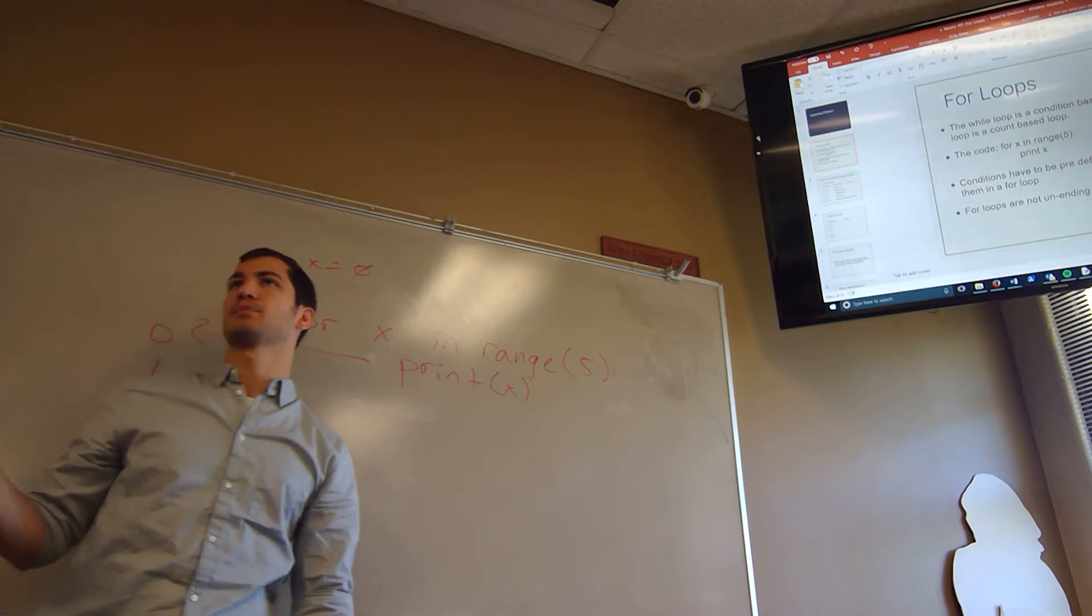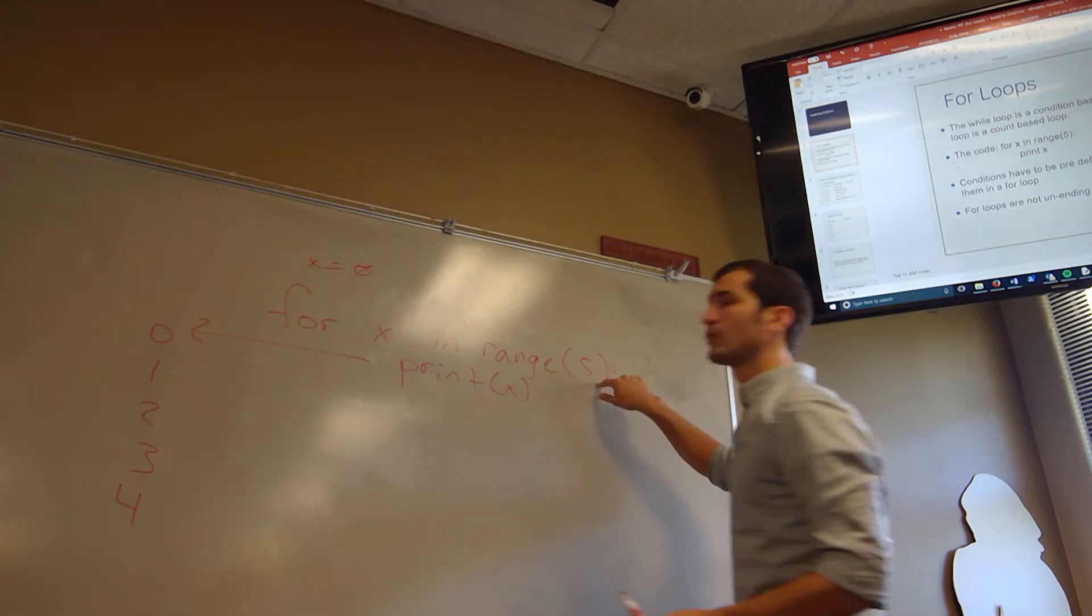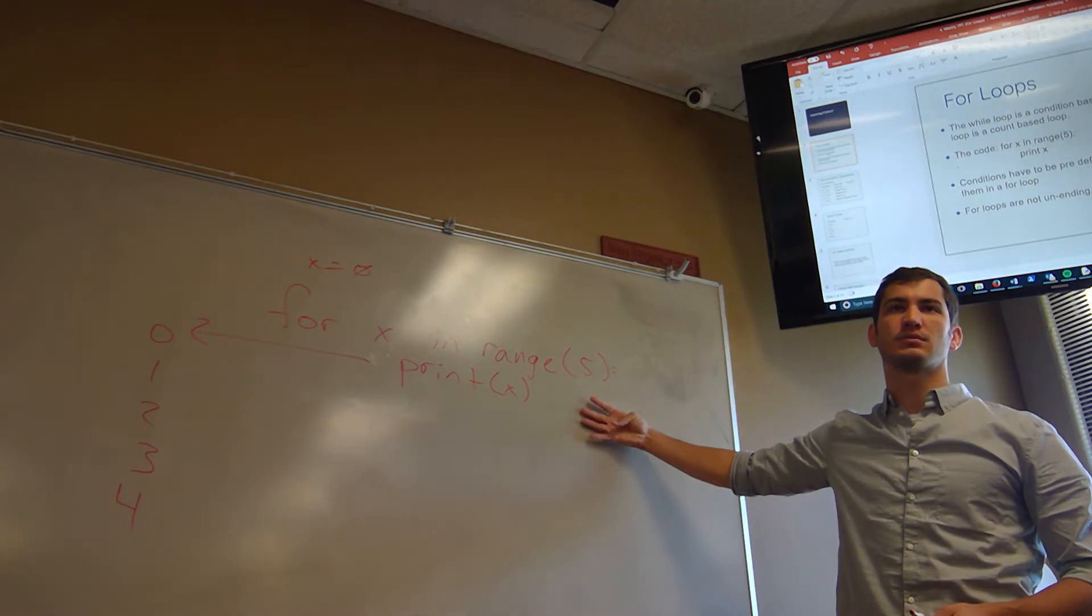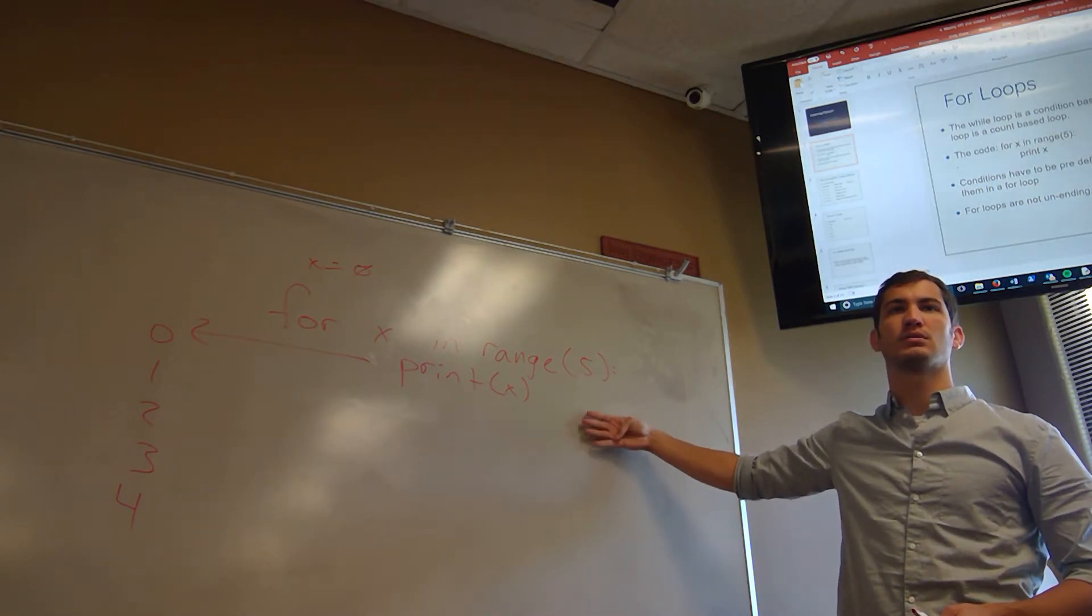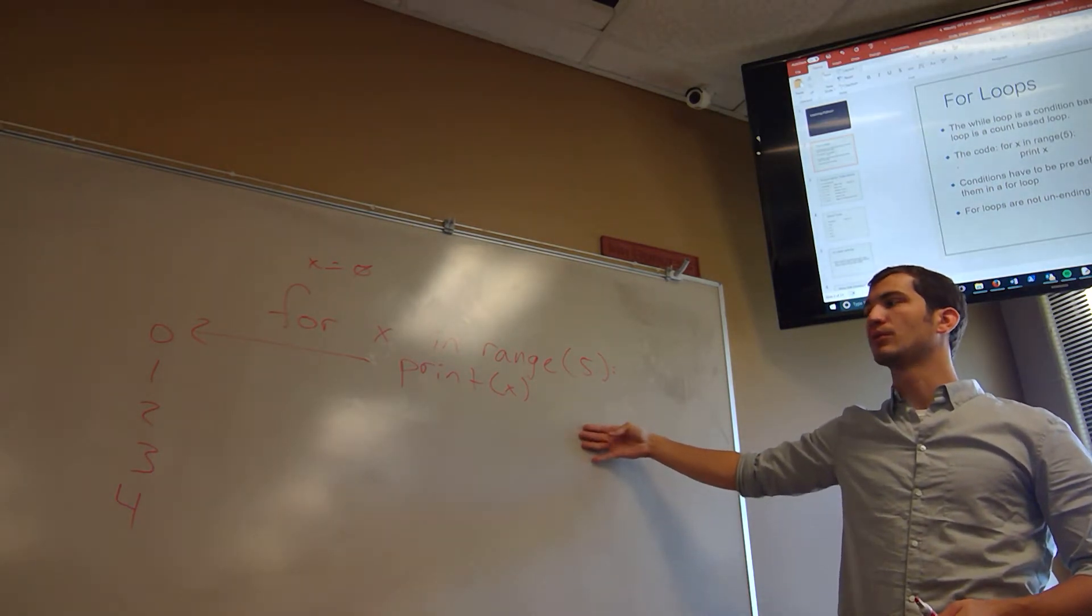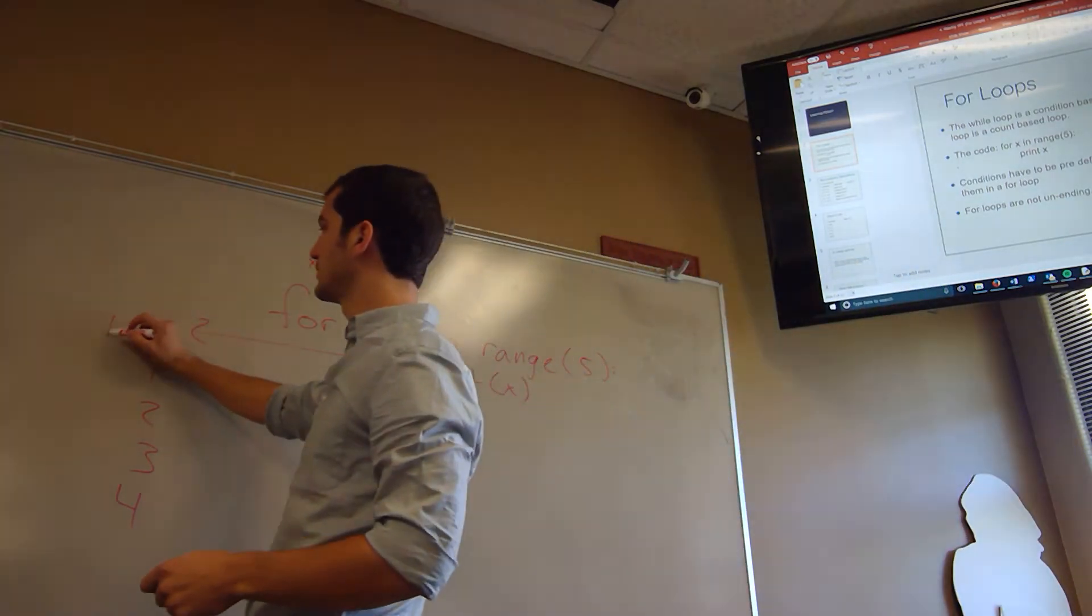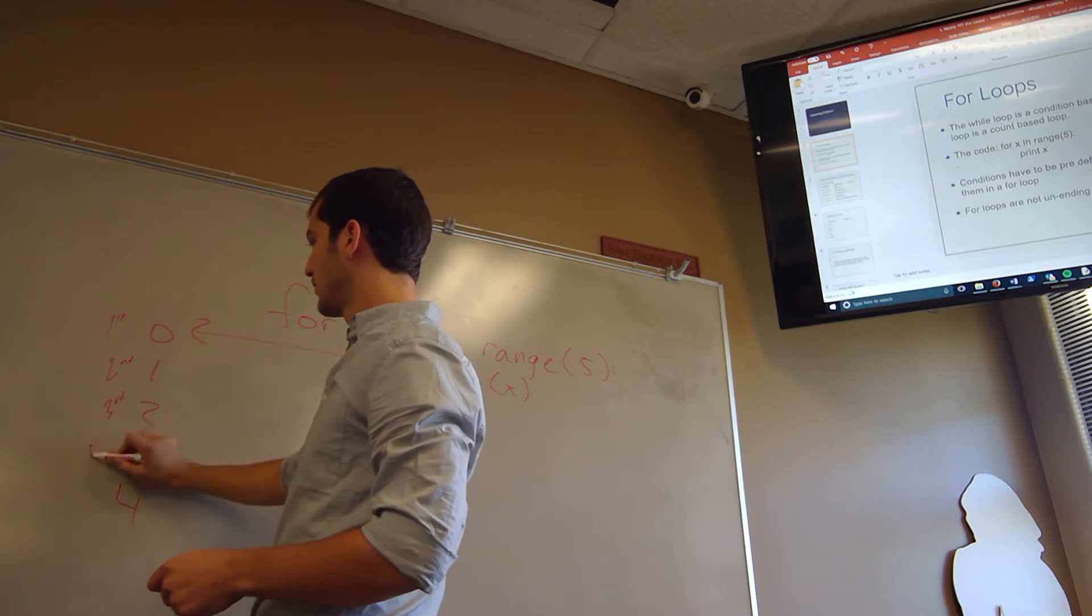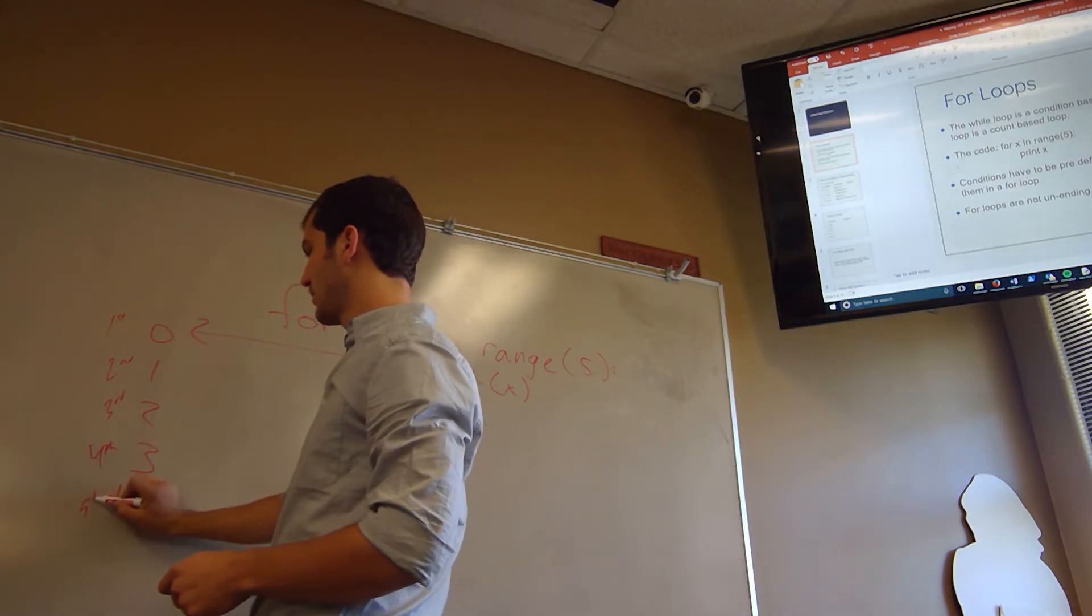Iteration is the, this loop will iterate 5 times. So the fourth iteration, what number are we? 3, or 3, yep, because this is the first iteration, second, third, fourth, fifth.